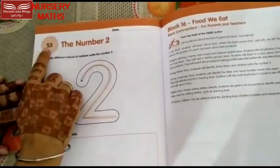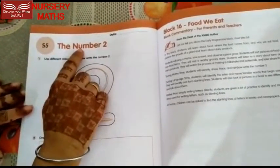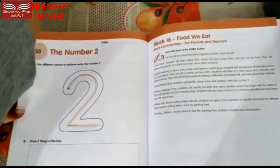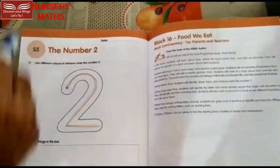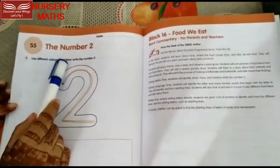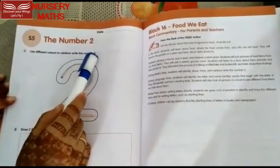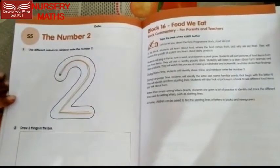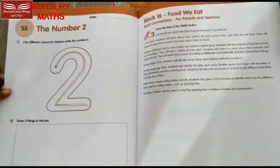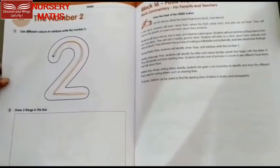Now, turn the page. Open the page 48. S5, The number 2. Our first question is: use different colors to rainbow write the number 2. तो, जिस तरह हमने number 1 को rainbow write किया था, इसी तरह हम number 2 को भी rainbow write करेंगे, अलग-अलग colors के साथ, seven colors के साथ.